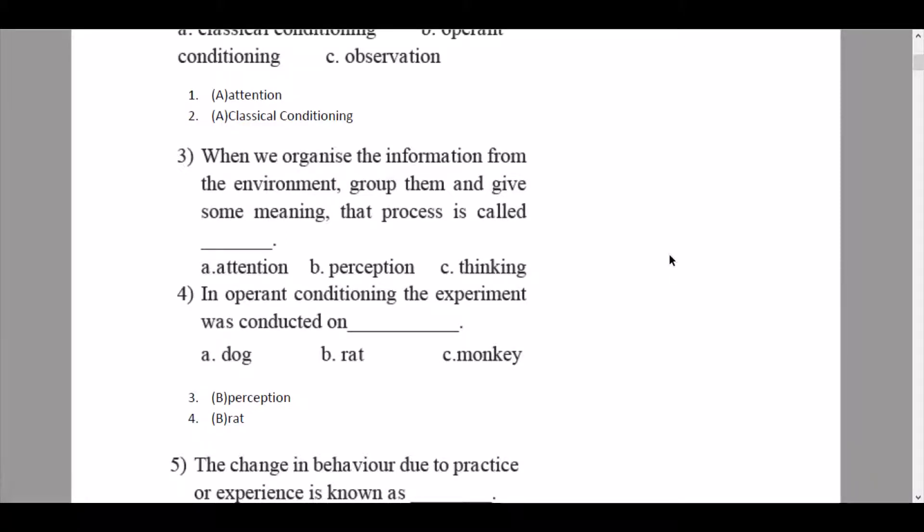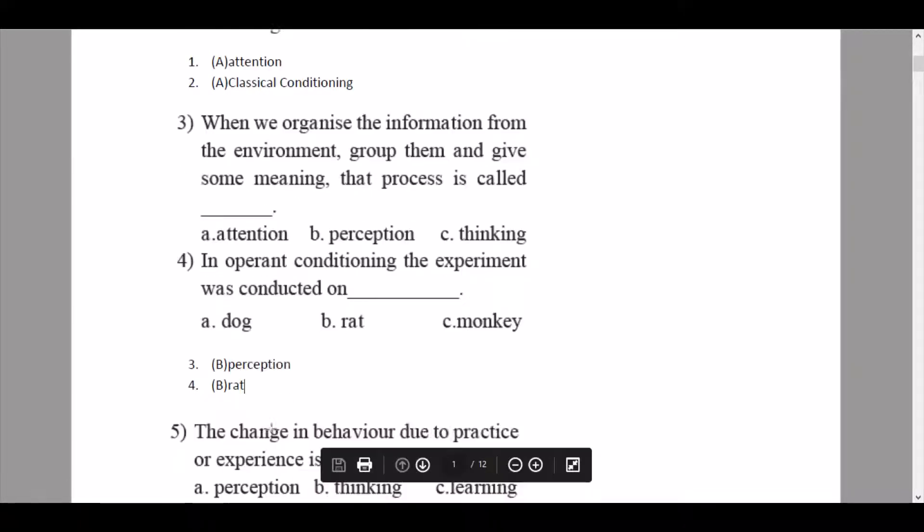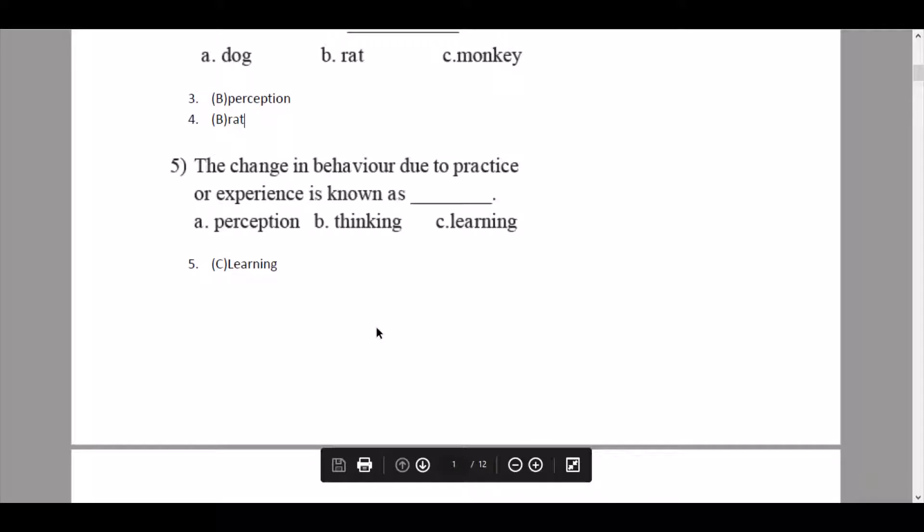Then we have the fourth question: in operant conditioning the experiment was conducted on a rat. So the answer is option B. Question number five: the change in behavior due to practice or experience is known as dash. So the answer here is option C, learning.